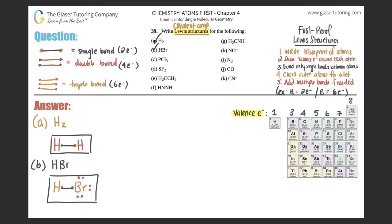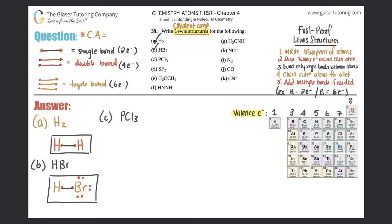Part c, PCl₃: this one is tricky because we have a central atom. The rule for the central atom is that it's always the least electronegative element. Hydrogen is never in the middle - if you have hydrogen and something else, the other atom goes in the middle.